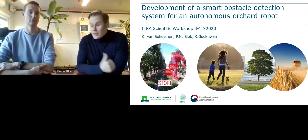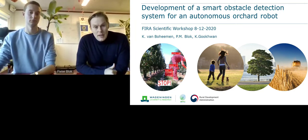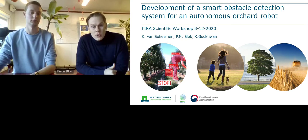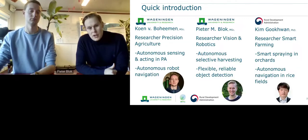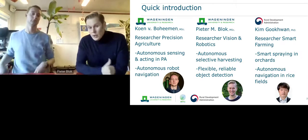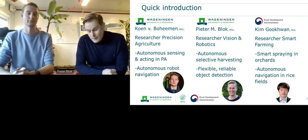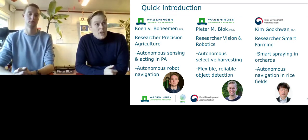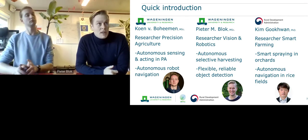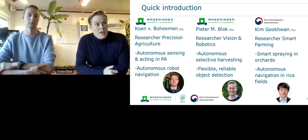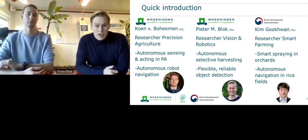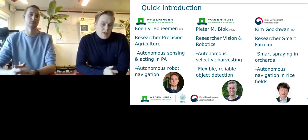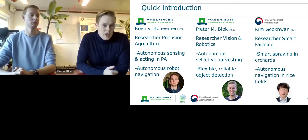My name is Peter Bloch, and hopefully you can see my colleague Koen van Bohemen, and we will give a presentation on the development of a smart obstacle detection system for an autonomous orchard robot. Most of the presentation will be done by my colleague Koen. I'm a researcher in computer vision and robotics at Wageningen University and Research. Our focus and expertise is mainly on computer vision techniques for agricultural operations — last years we focused on autonomous selective harvesting, and now we're also developing obstacle detection systems for autonomous robots.